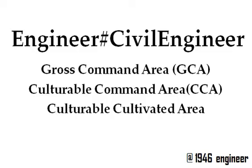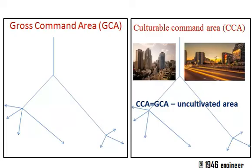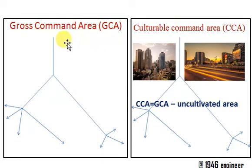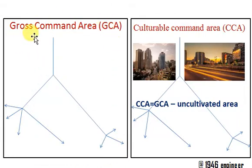When an unlimited quantity of water is supplied through a canal, the total area which is getting benefited by that canal is called the Gross Command Area.